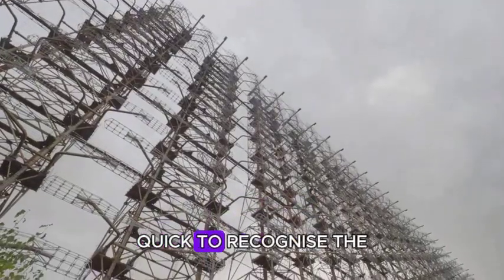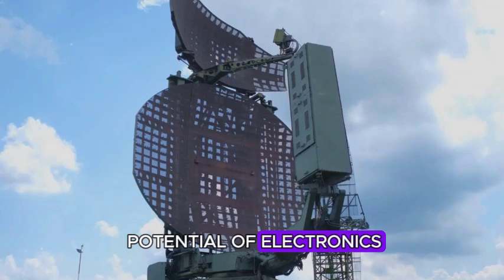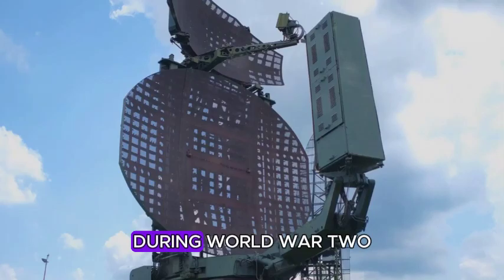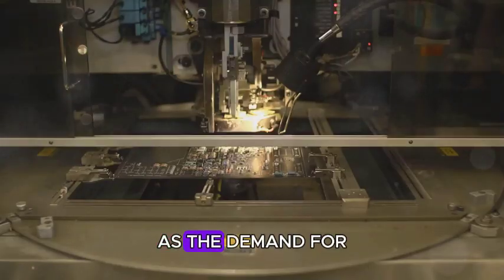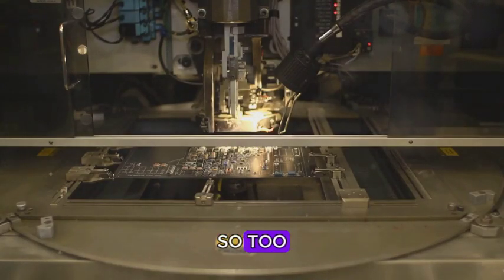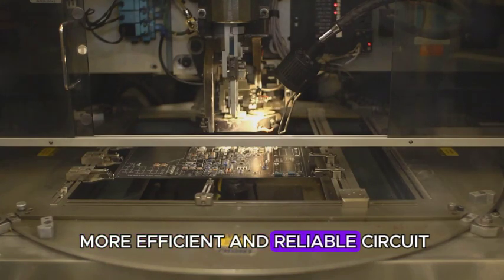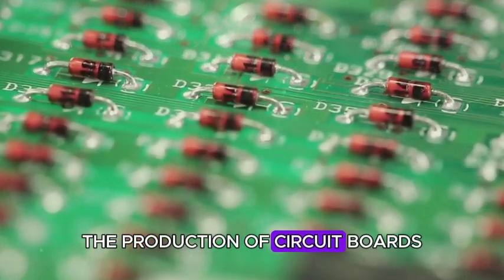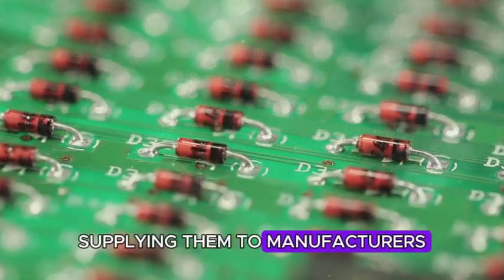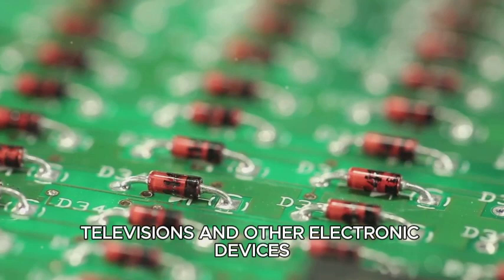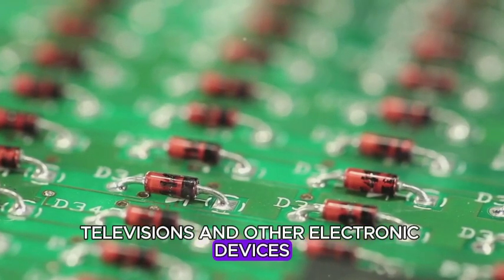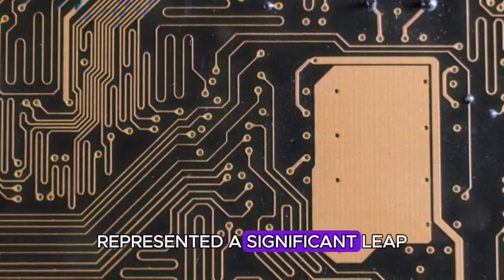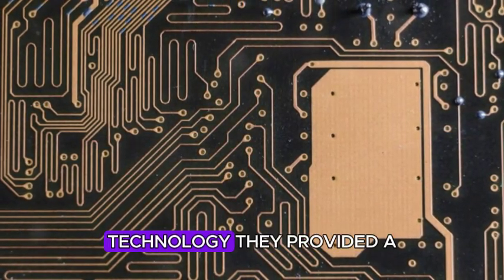The military, quick to recognize the potential of electronics, used circuit boards in radar systems and other critical equipment during World War II. As the demand for electronics grew, so too did the need for more efficient and reliable circuit board manufacturing methods. Companies began to specialize in the production of circuit boards, supplying them to manufacturers of radios, televisions and other electronic devices. These early circuit boards, while primitive by today's standards, represented a significant leap forward in electronics technology.